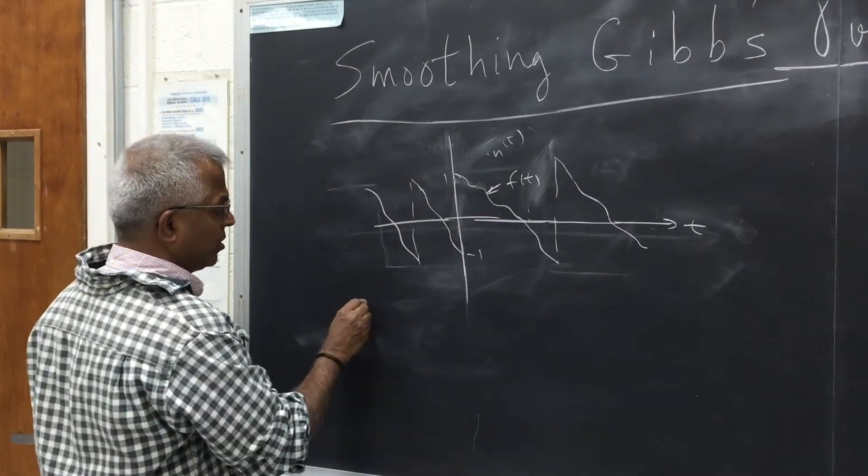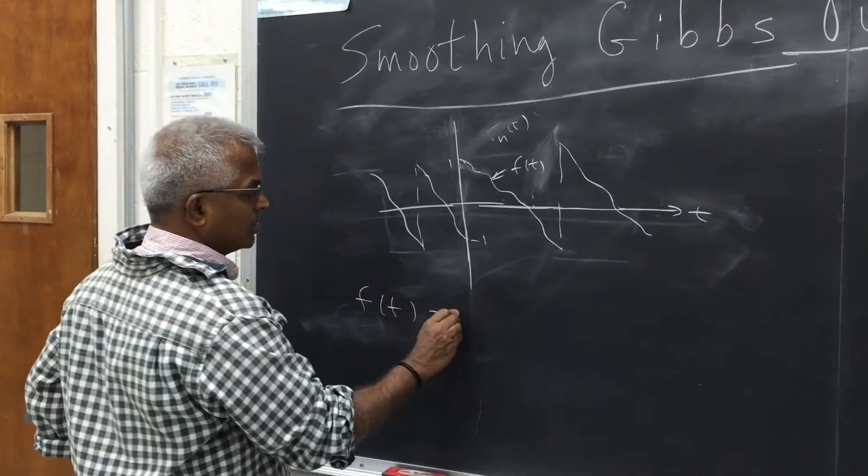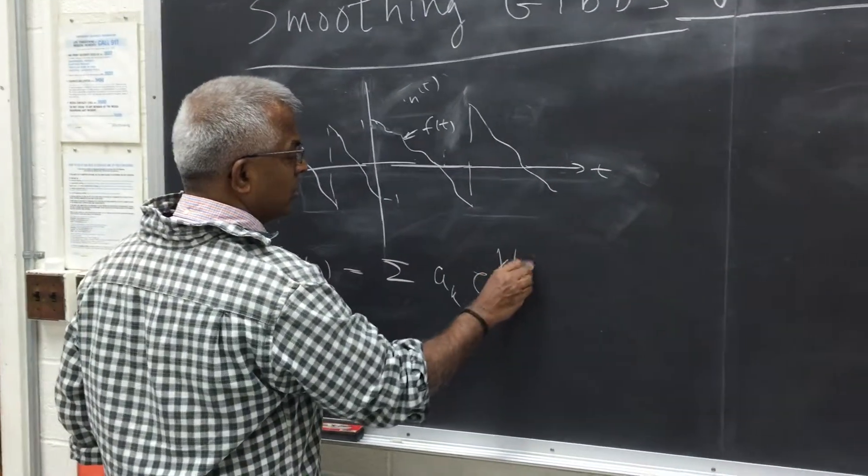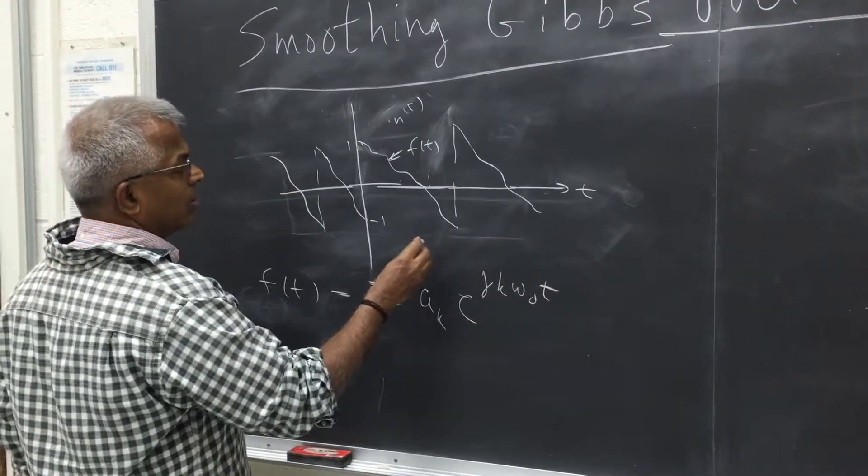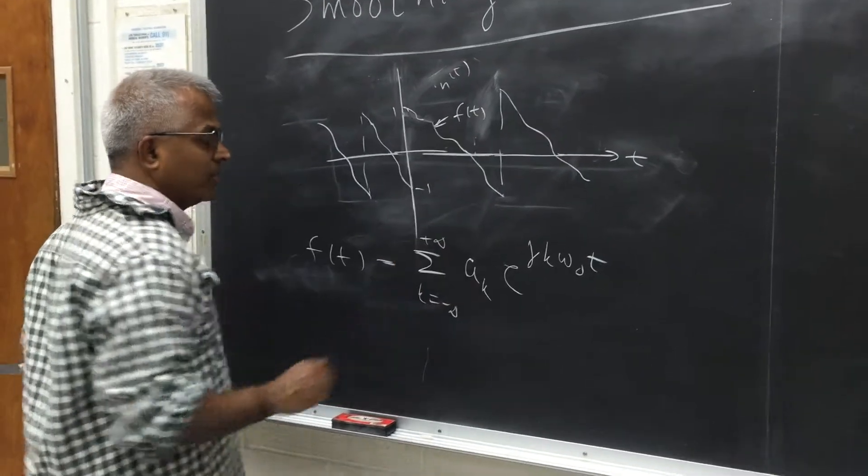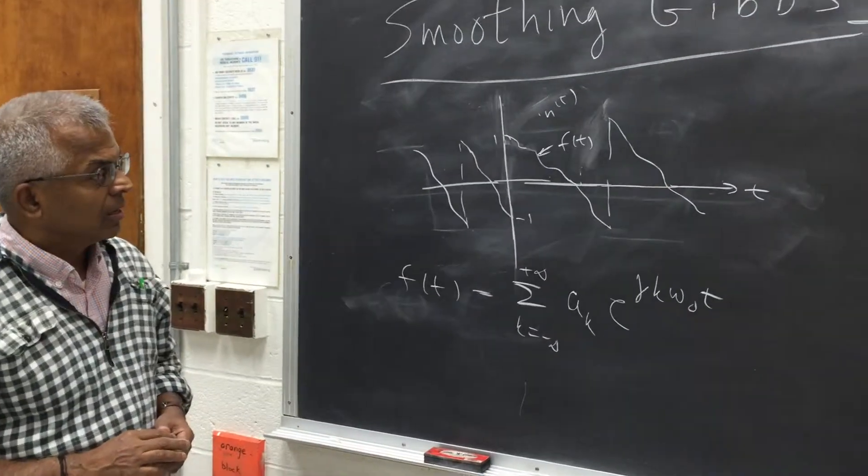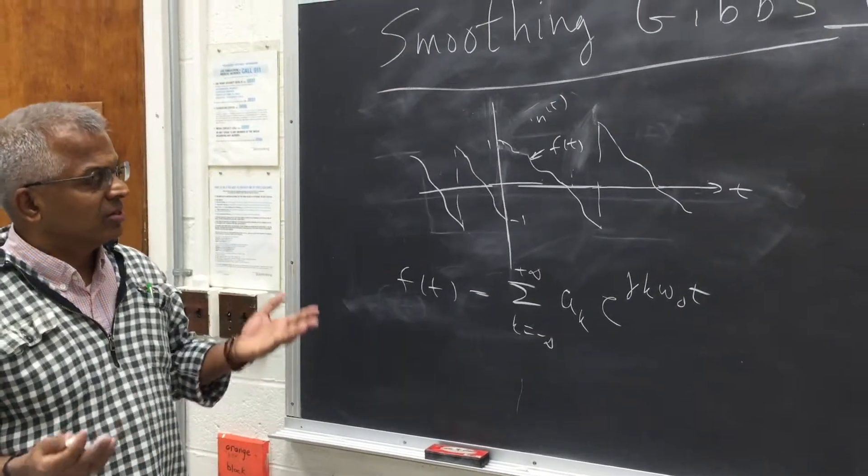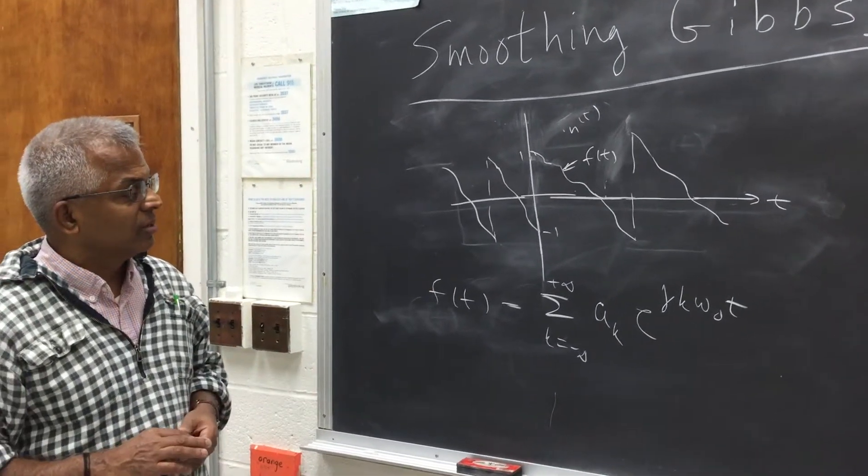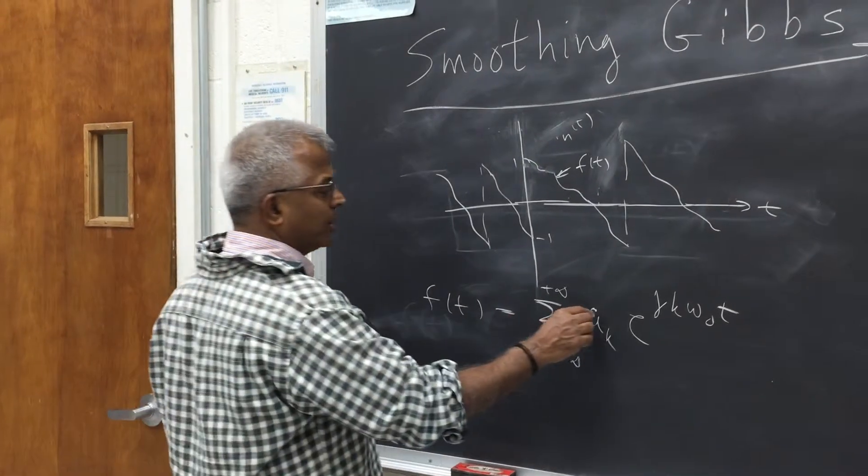So if you call this to be F(t), this has a Fourier series expansion, a_k e raised to j k omega naught, k equal to minus infinity to plus infinity in general. And of course if the function is even then you only have cosine terms, if it is odd you only have sine terms, etc. But in general you can write it like this.